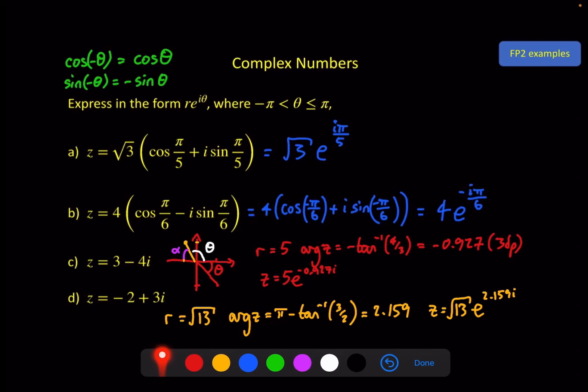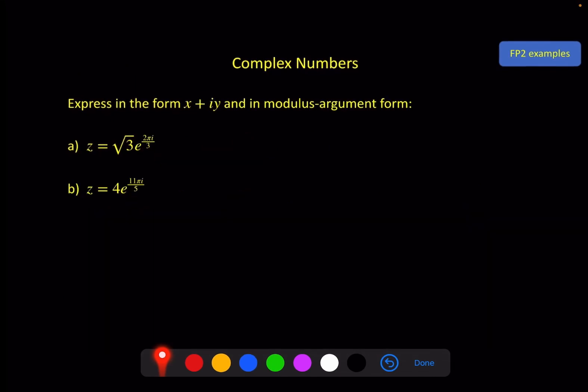So here we've got examples converting into exponential form. Next we're going to do some examples converting from exponential form. So the next example is taking the exponential form and putting it back into x plus iy and modulus argument form. Now to do this I would normally do the modulus argument form first because that converts very easily.